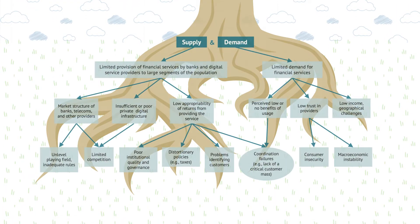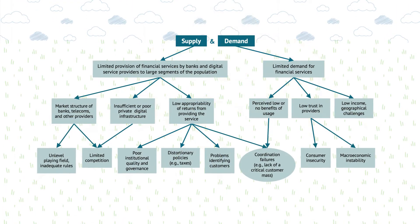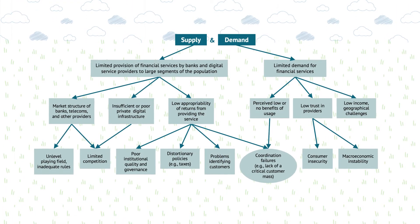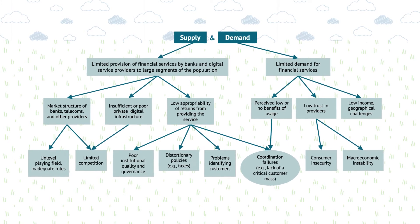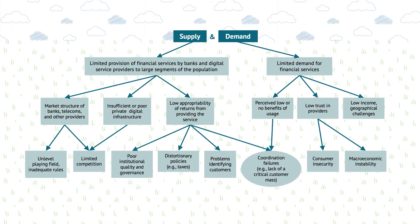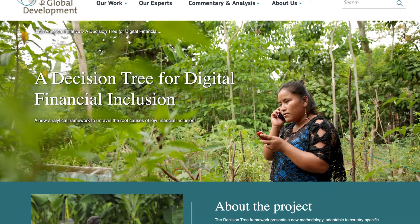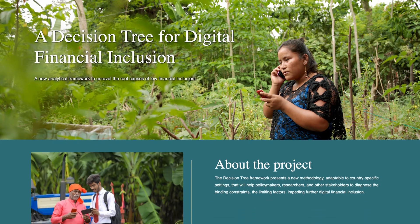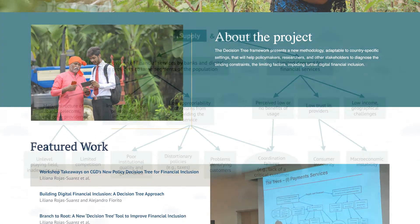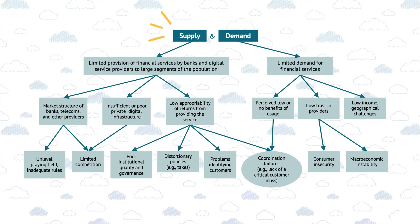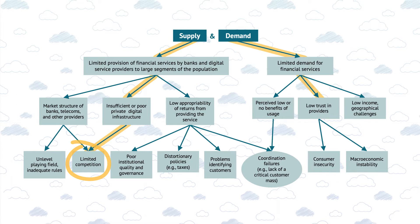Policymakers now have a new tool to answer these questions: the decision tree for improving digital financial inclusion from the Center for Global Development. The tree helps policymakers examine the constraints on the supply and demand side that might prevent people from accessing digital financial services, such as limited competition or low trust in providers.